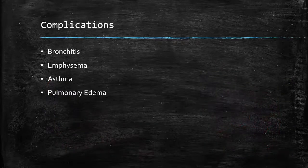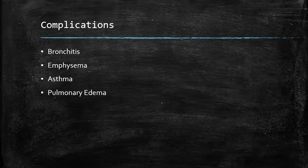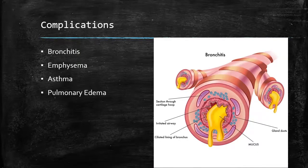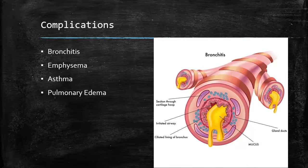Now that we have a good understanding of the anatomy and physiology of the respiratory system, let's talk about some complications we're going to see in patients out in the field. These four diseases are pretty common ones we'll see and ones we'll probably have to intervene on. The first one is bronchitis — a chronic inflammation of the lining of the bronchials. The bronchials are those tubes that bring air into the alveoli. Over time, from either smoking or other environmental factors like where people work or live, they get this chronic inflammation.